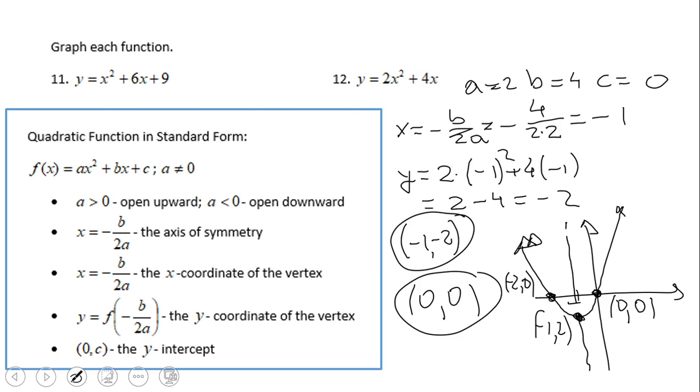In this case, c is 0, so the y-intercept is 0 and 0. So I reflect the point over the axis of symmetry, we got a third point, negative 2 and 0, and that is the graph. If you enjoyed this PowerPoint, this video clip, don't forget to click the like button and come back on C-Square for more math video clips.